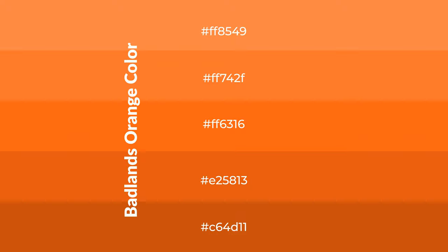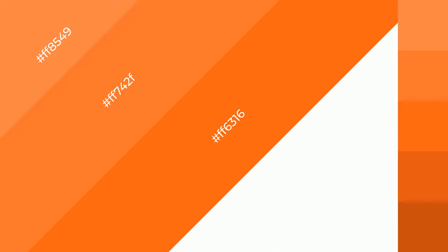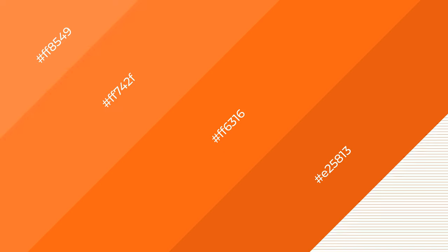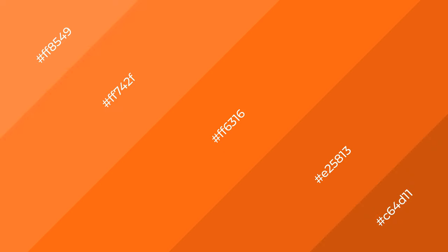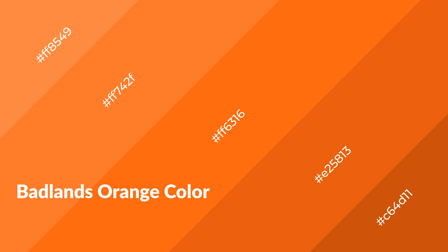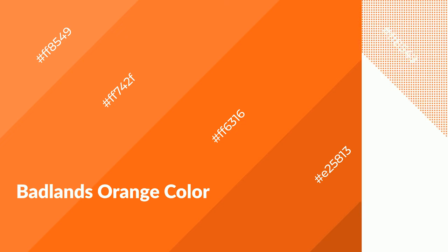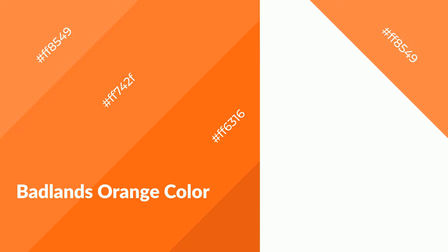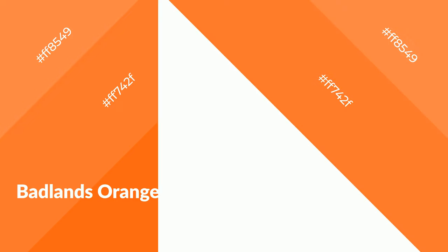To generate shades of a color, we add black to the color. Shades are used in patterns, 3D effects, and layers, and they create depth and drama. Badlands orange is a warm color and it emits cozier and active emotion. Warm colors are symbols of warmth, fire, heat, and sunshine.